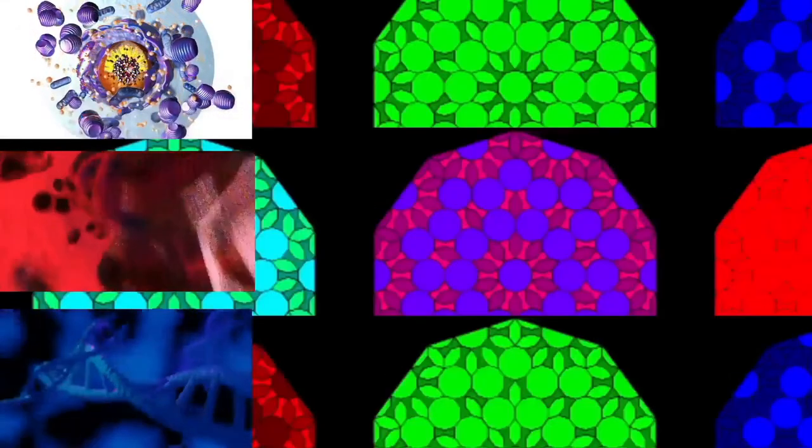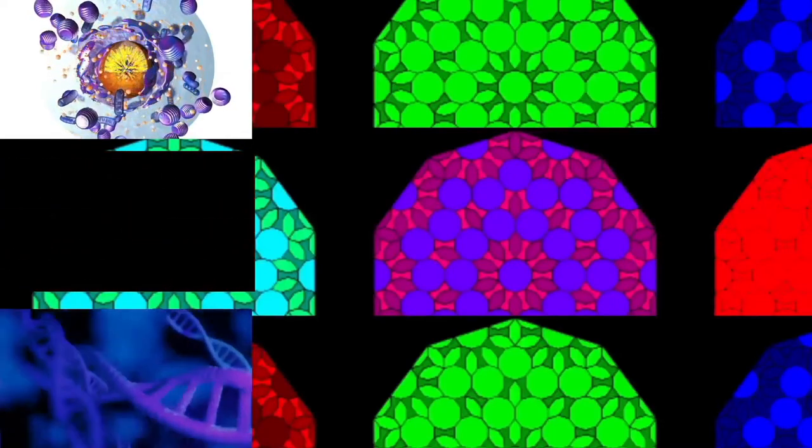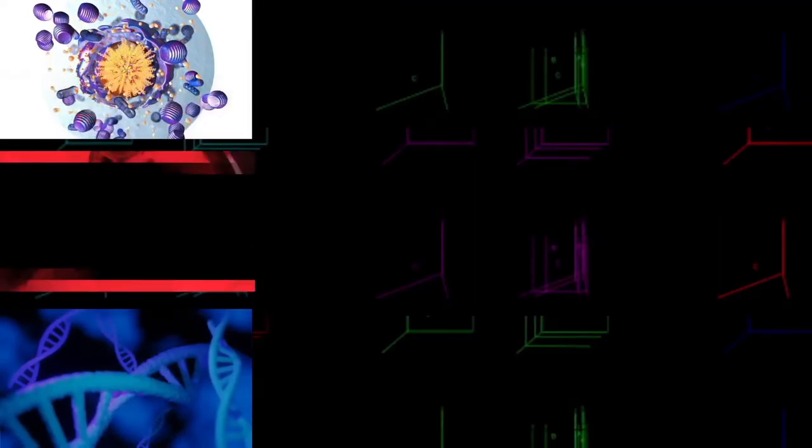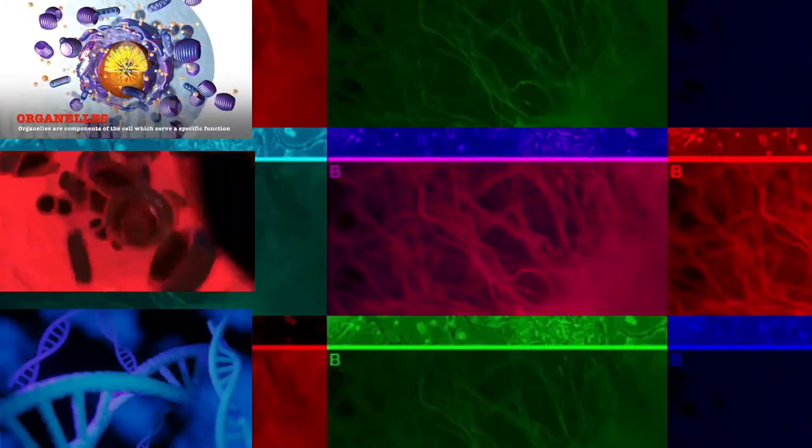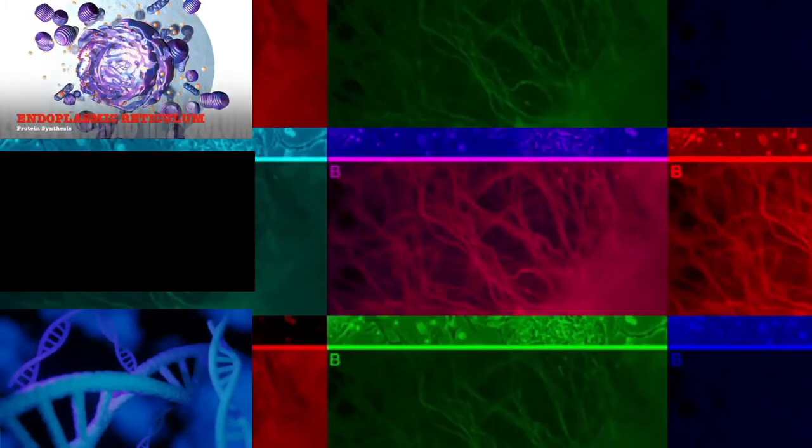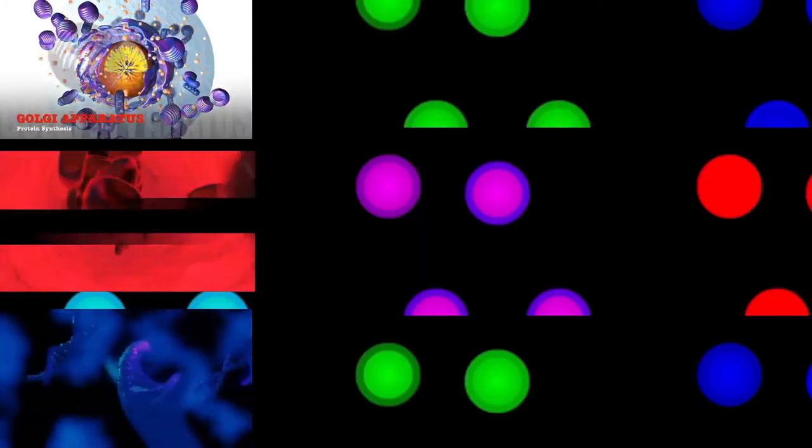During mitosis, the chromosomes, which have already duplicated, condense and attach to spindle fibers that pull one copy of each chromosome to opposite sides of the cell. The result is two genetically identical daughter nuclei. The rest of the cell may then continue to divide by cytokinesis to produce two daughter cells.